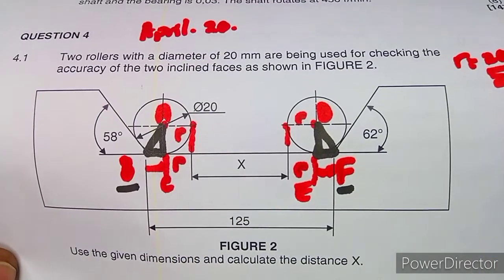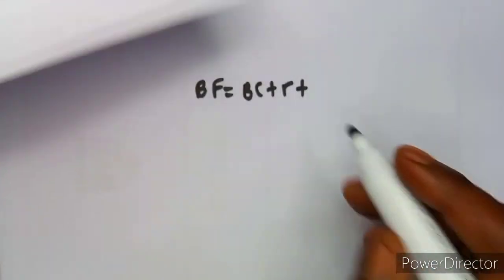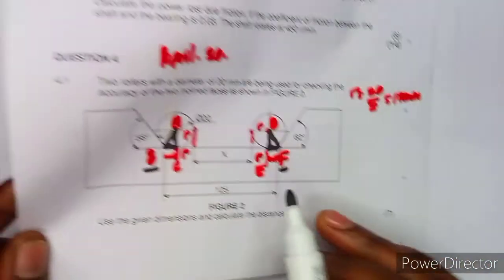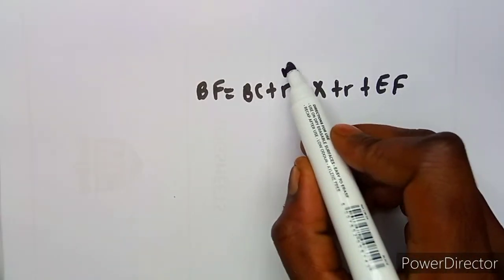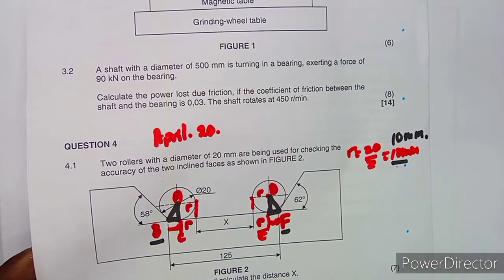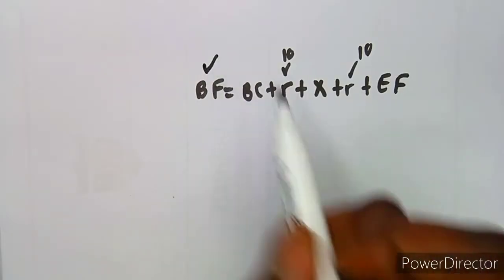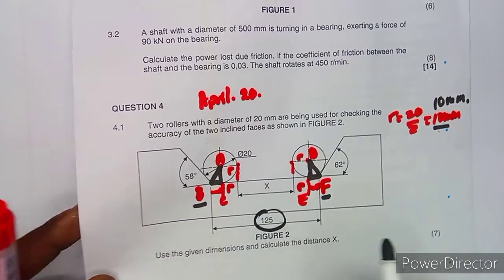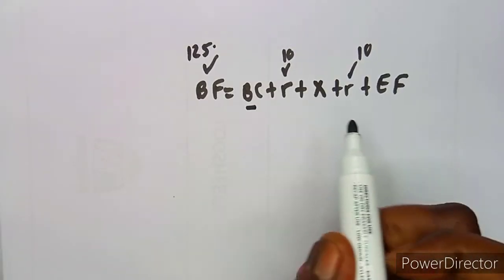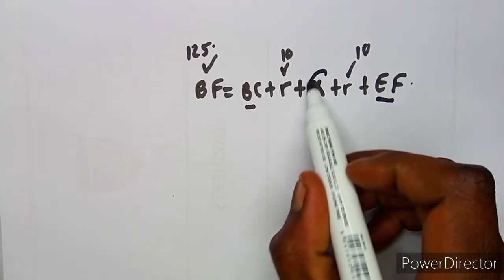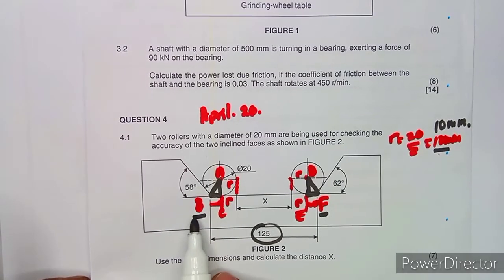So the equation is: 125 = BC + radius + x + radius + EF. That gives us 125 = BC + 10 + x + 10 + EF. We already have 125mm for BF and we know the radius is 10mm. We need to calculate BC and EF so that we can find x.